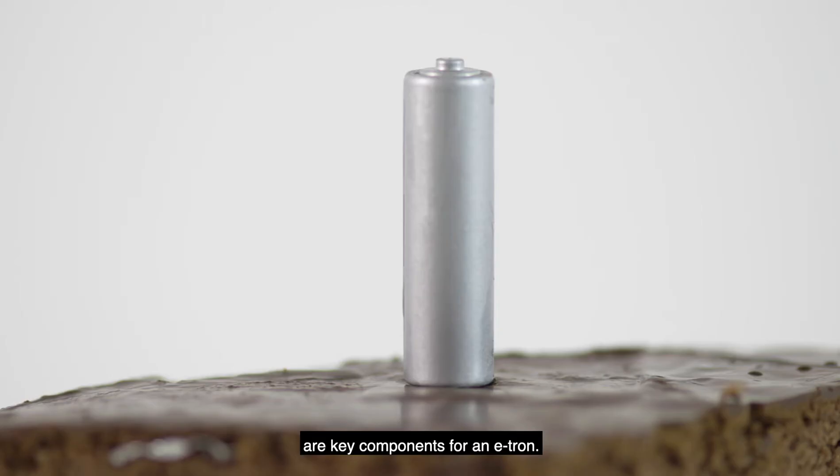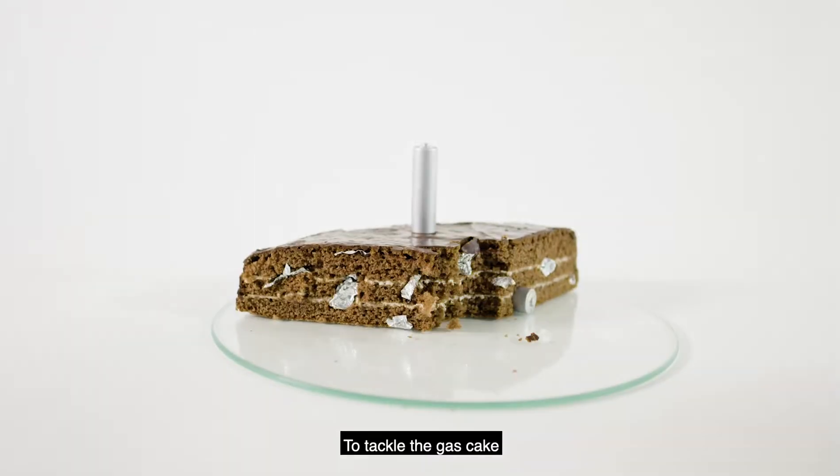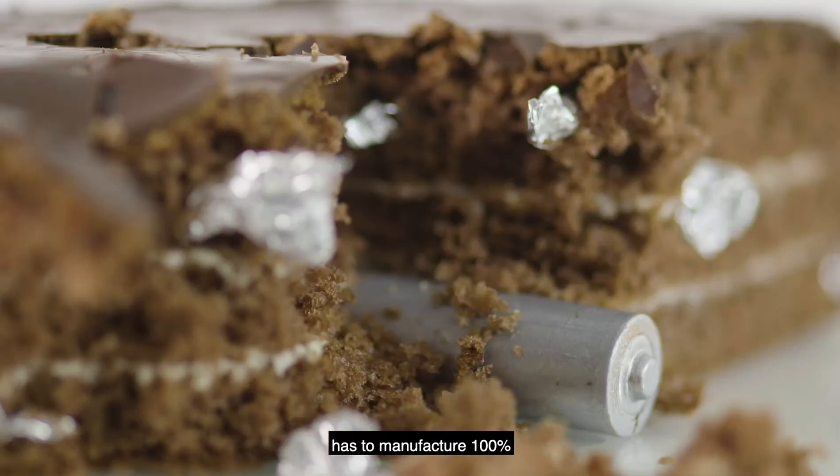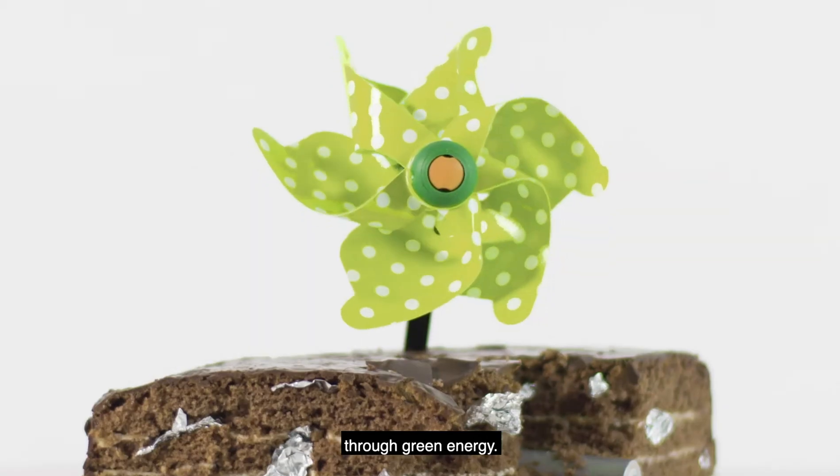Aluminum and batteries are key components for an e-tron. To tackle the gas cake, we decided that every provider of high-voltage battery cells has to manufacture 100% through green energy.